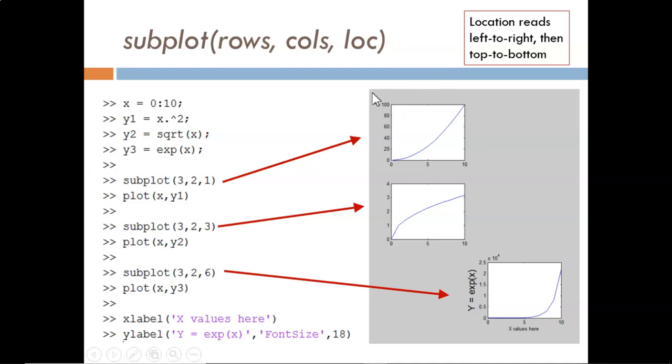The number of these slots reads like a book, left to right, and then top to bottom. After choosing a specific slot, then I can make the plot. I do this with the standard plot function, and the result is seen here. Then, I choose a different slot and make a new plot. Then, I do the whole thing one more time.